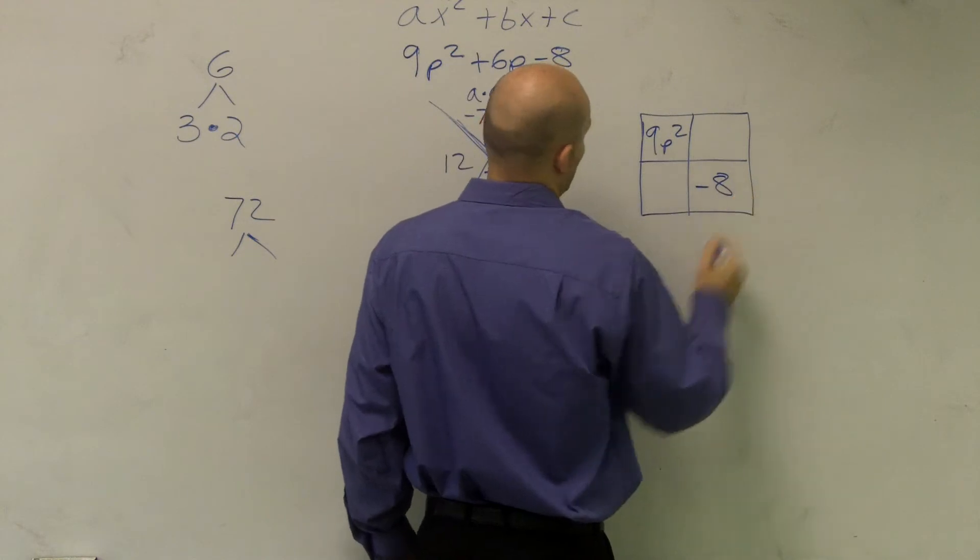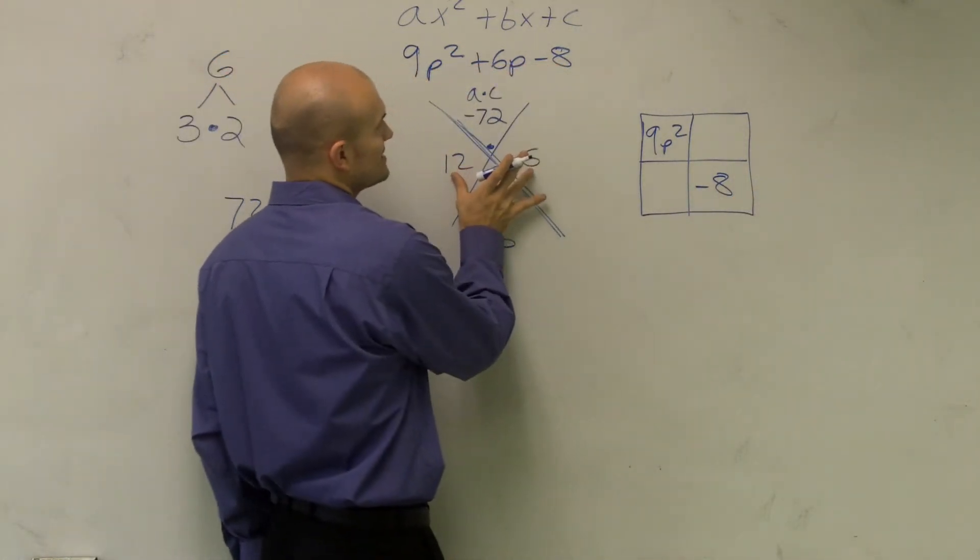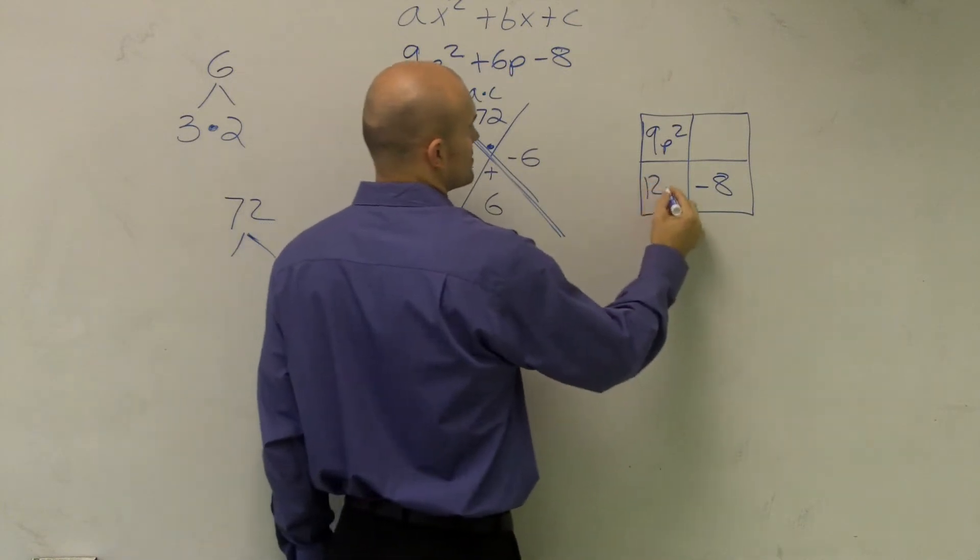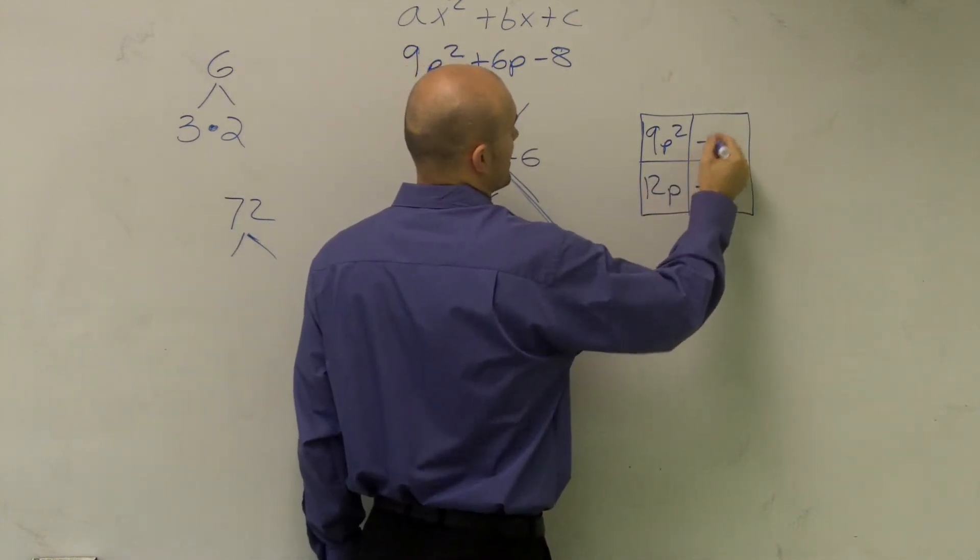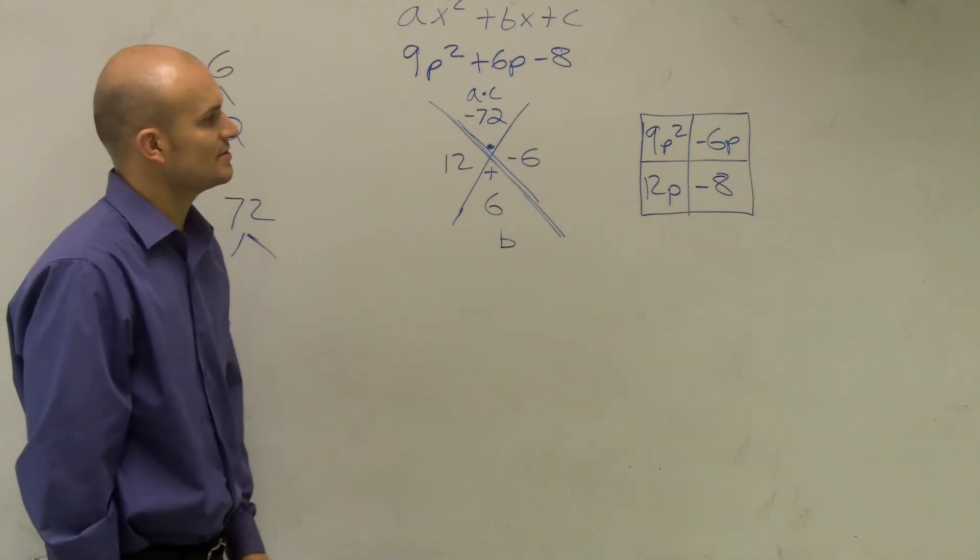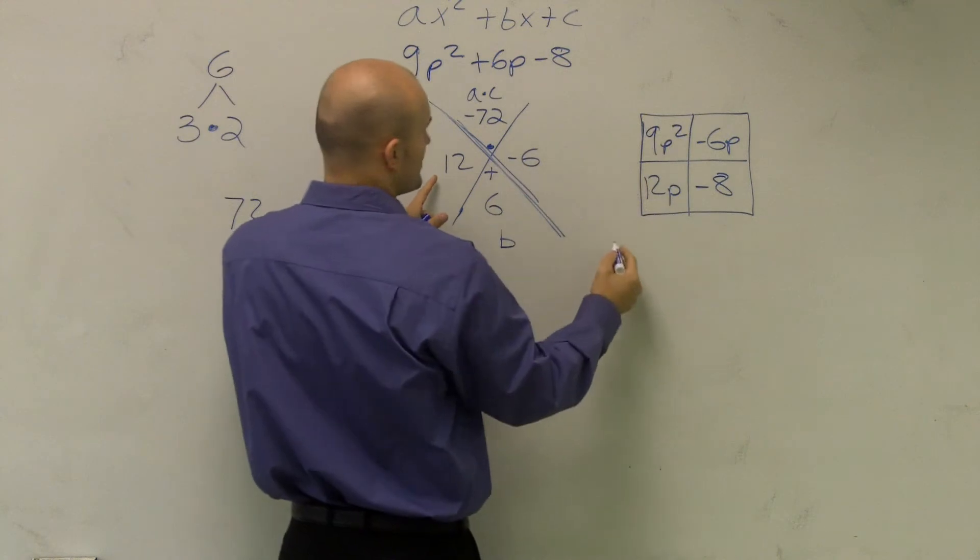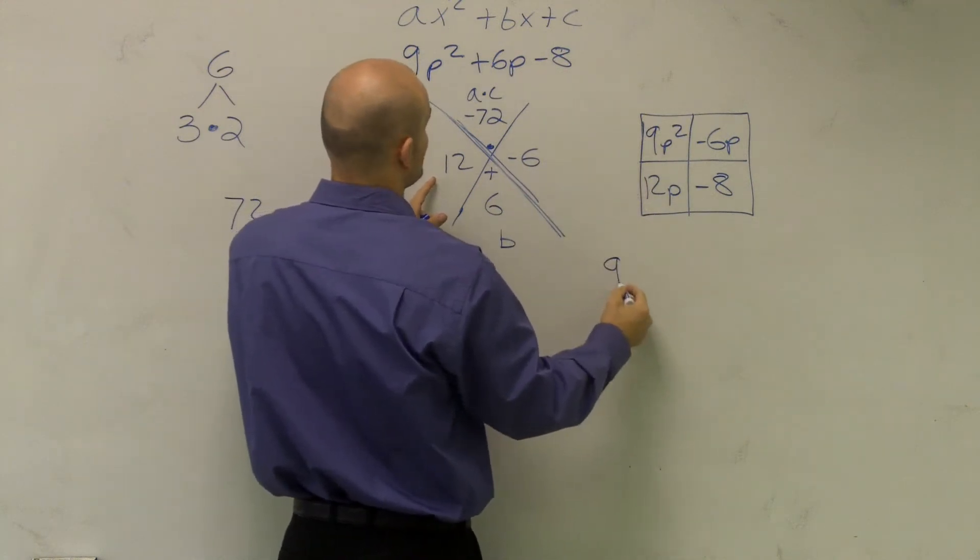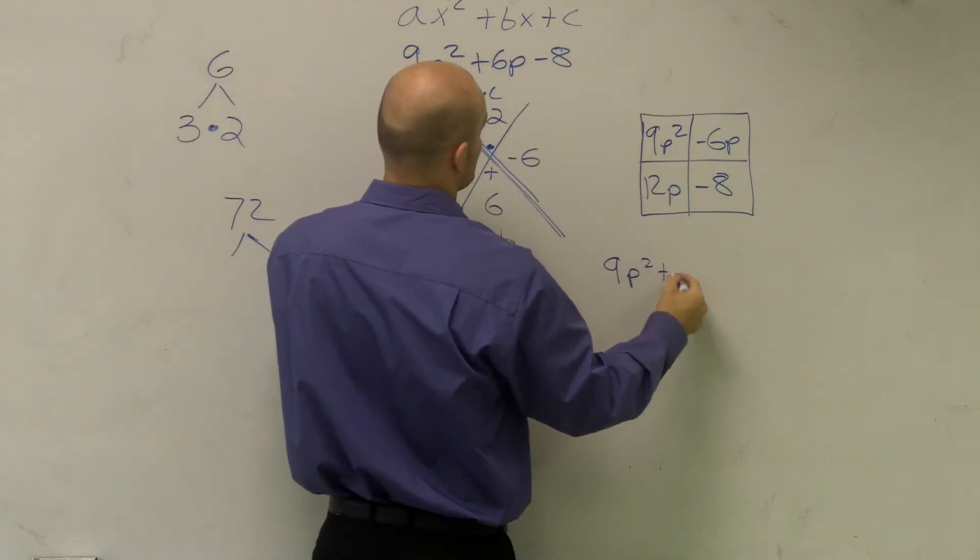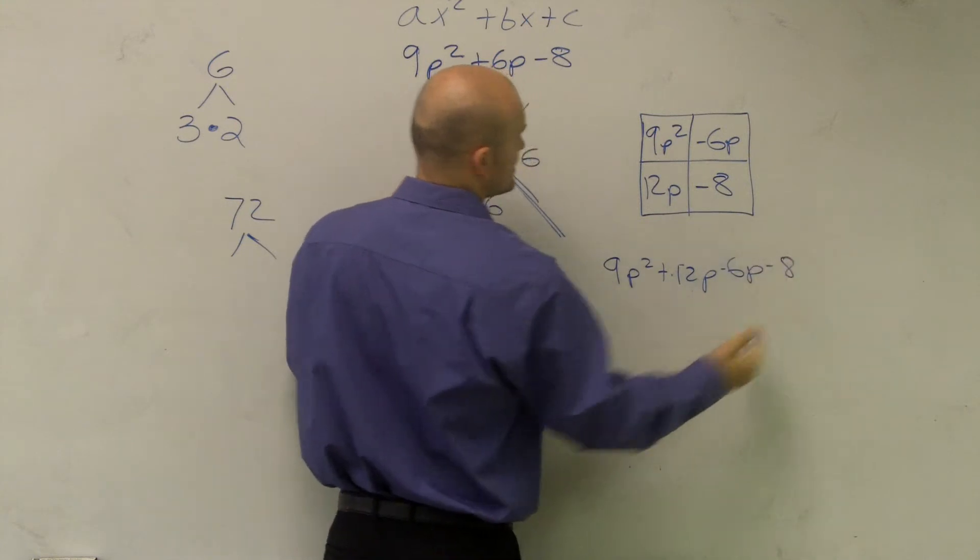So remember, if I multiply those first two terms, that gave me the first term. And when I multiply the last two terms, that gave me -8. So now what I'm going to do is I'm just going to represent, these can represent my middle two terms, 12p and -6p. So now what I want to do is figure out, because remember, if I rewrite everything,